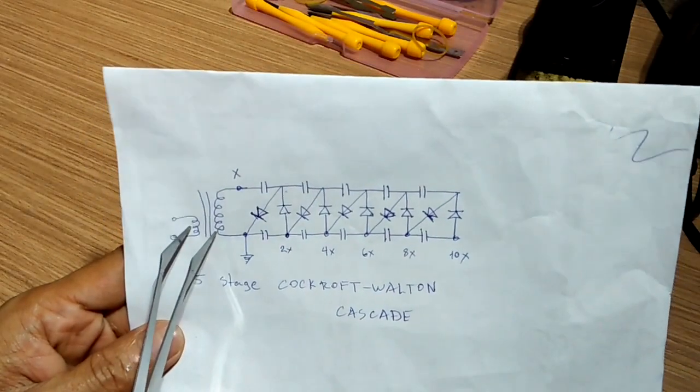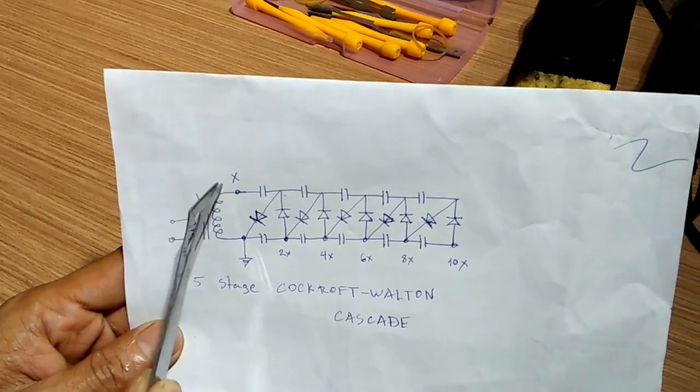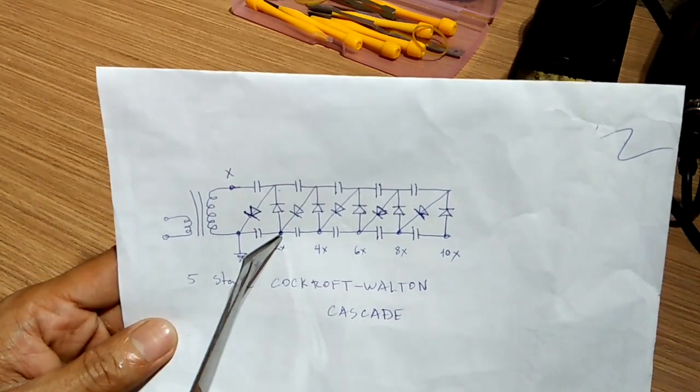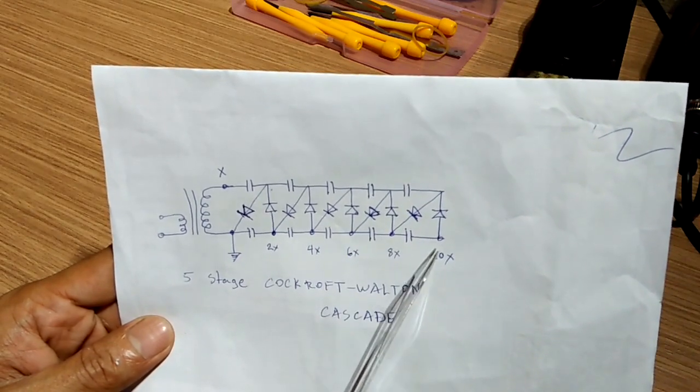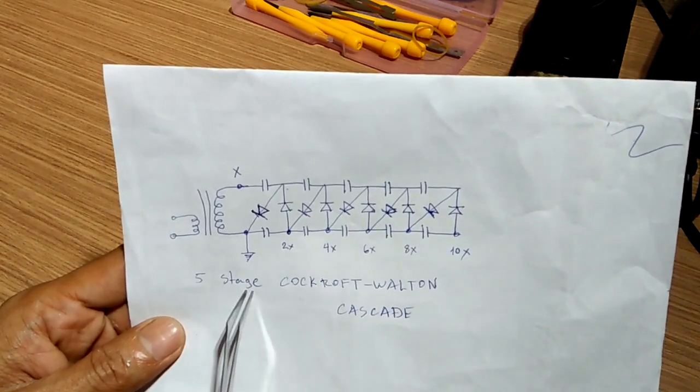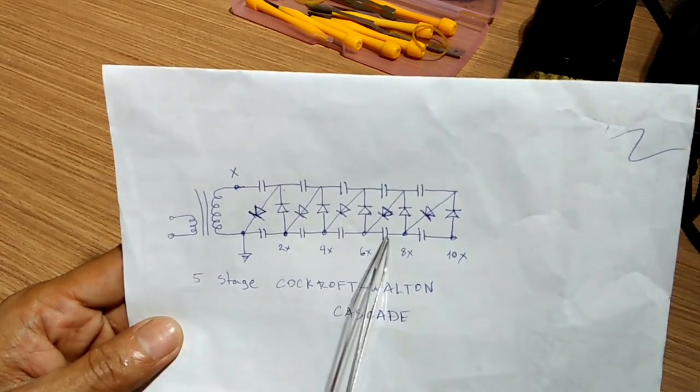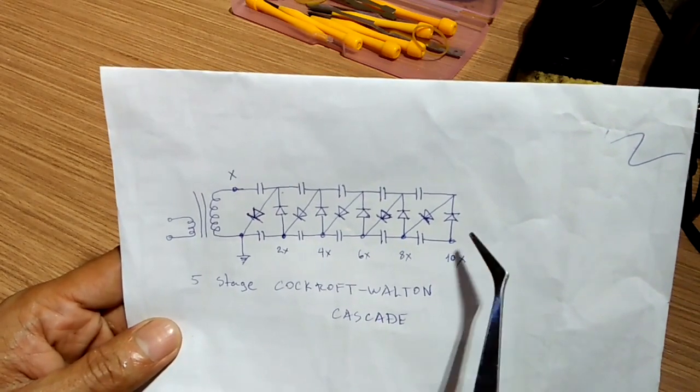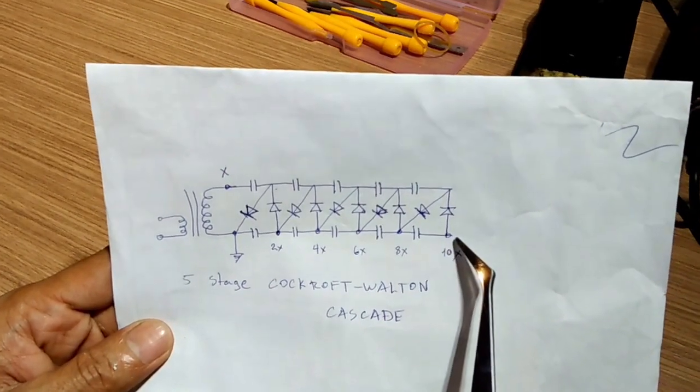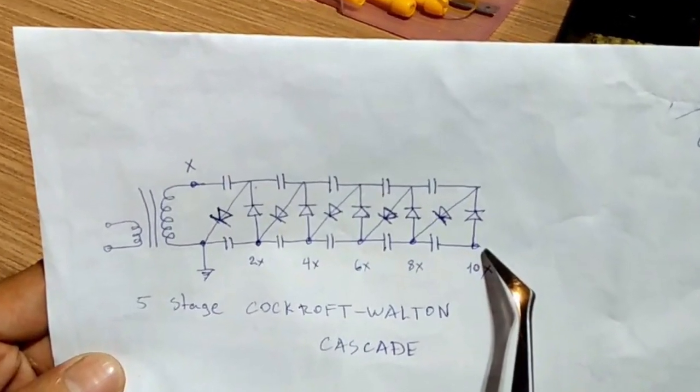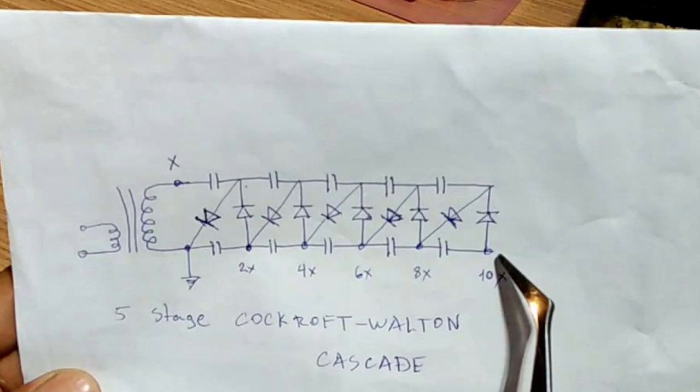This is the circuit diagram of the high voltage cascade that I am going to build. It will be a 5-stage cascade, and in theory, the final output voltage will be 10 times as high as the input to this voltage multiplier. Take note of the arrangement of the diodes, as the output is made to be negative, just like the usual powder coating guns.